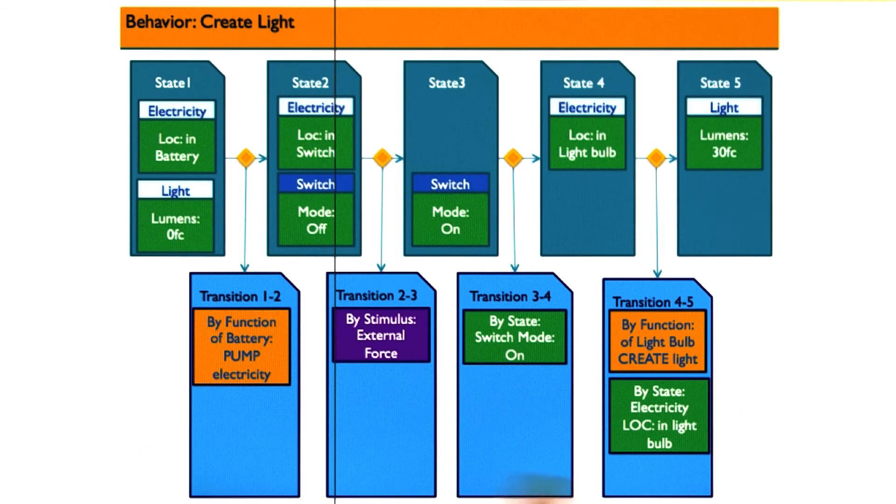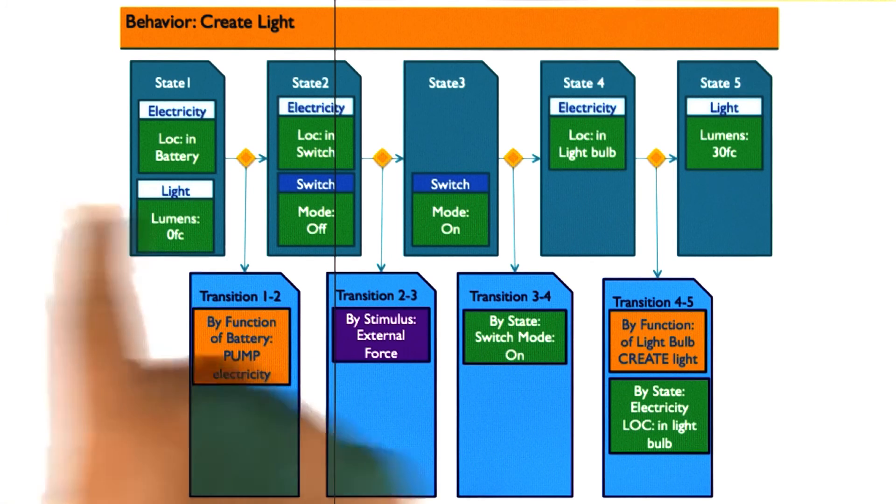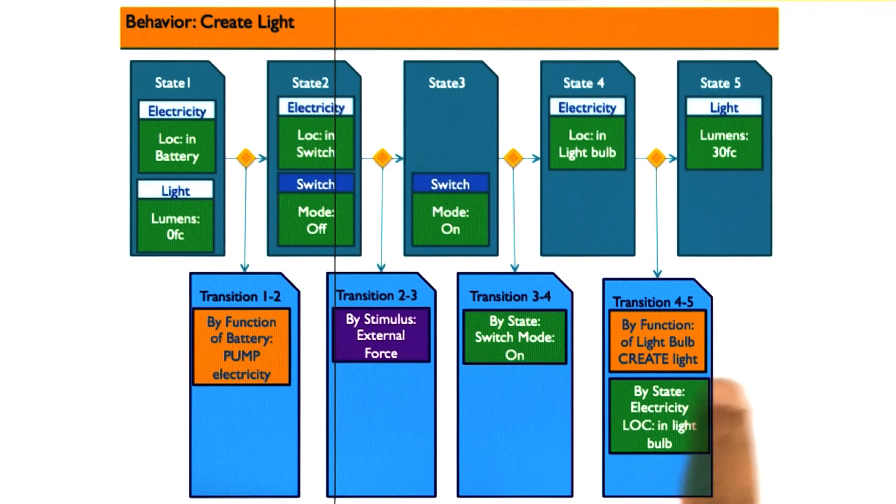In this way, structure behavior function models capture not just the visible structure, but also the invisible causal processes, the behaviors, and the functions. Moreover, they capture that at multiple levels of abstraction, at the level of the flashlight, at the level of the bulb, and so on.